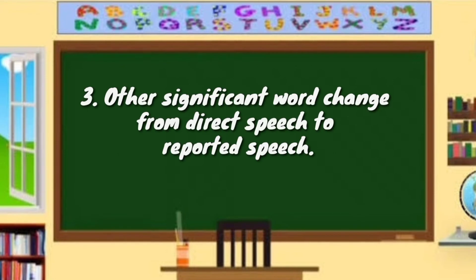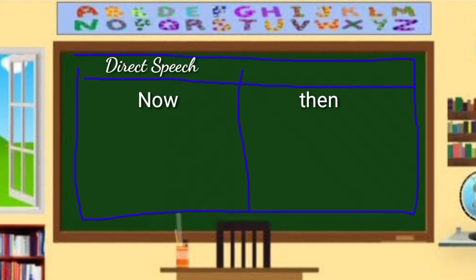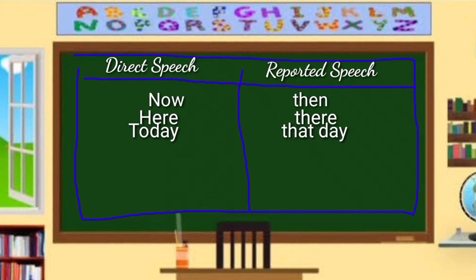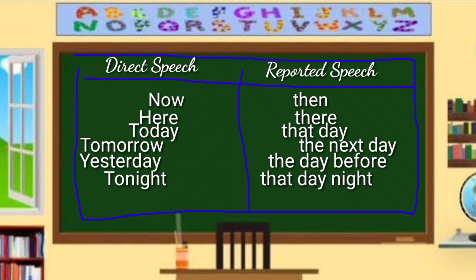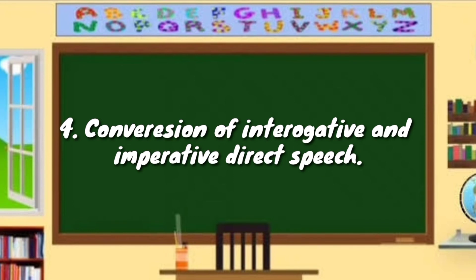Now let's proceed to other significant changes. The basic rules for time and place expressions: 'now' becomes 'then,' 'here' becomes 'there,' 'today' becomes 'that day,' 'tomorrow' becomes 'the next day,' 'yesterday' becomes 'the day before,' 'tonight' becomes 'that night,' 'this' becomes 'that,' and 'these' becomes 'those.'